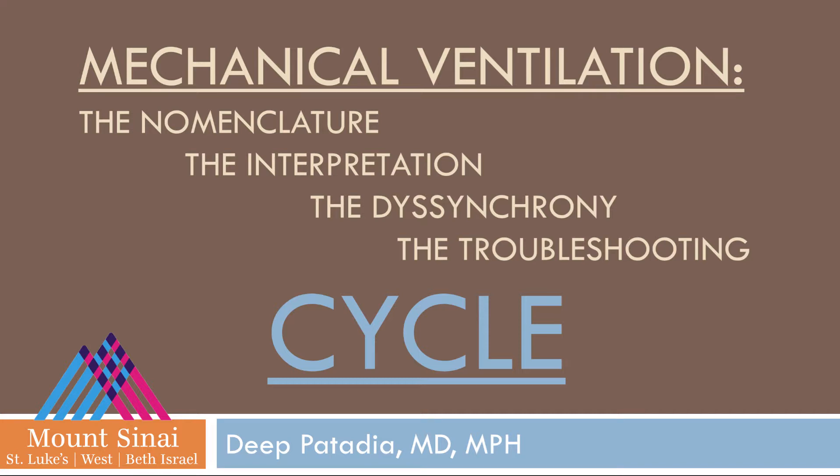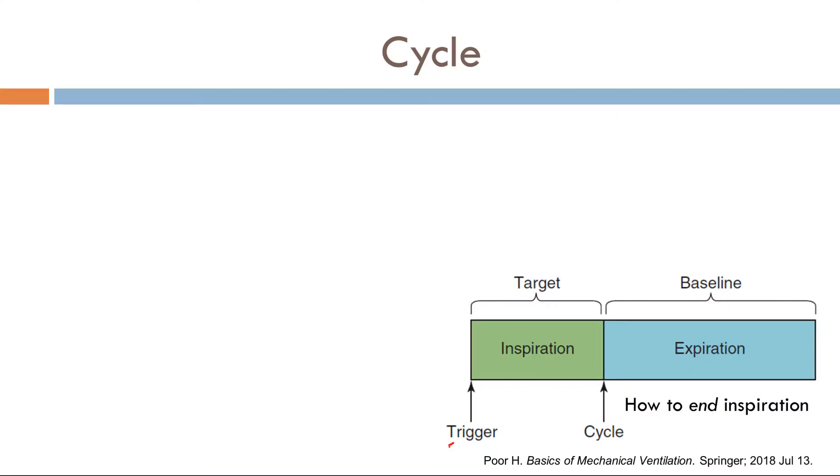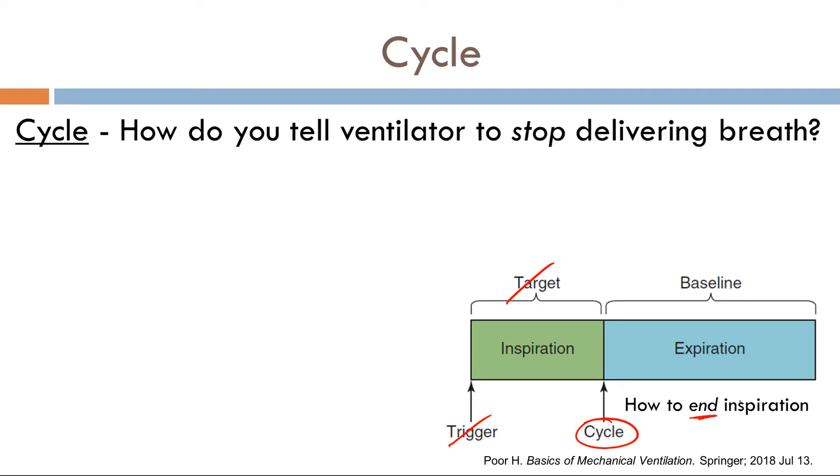Now to continue our mechanical ventilation lecture series, we're going to be talking about the cycle variable. So we've talked about the trigger, we've talked about the target, now it's time to talk about cycle. Cycle is how to end inspiration. So how do you tell a ventilator to stop delivering a breath? A breath would continue indefinitely in a ventilator unless a particular variable told it to stop delivering a breath. What's that variable? That's the cycle variable.